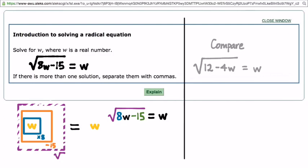So when you squared both sides, what did you end up with on the left? What is the square root of 8w minus 15 quantity squared? 8w minus 15. Again, that was the whole point of squaring both sides, is that all that it does is it gets rid of the square root.